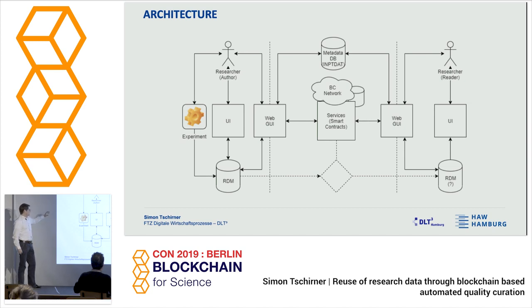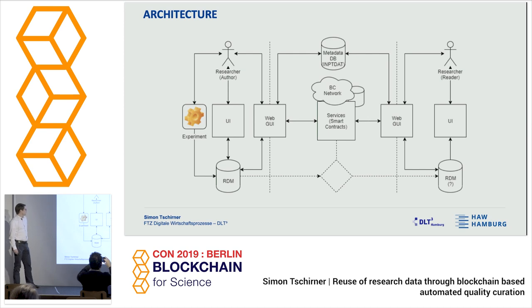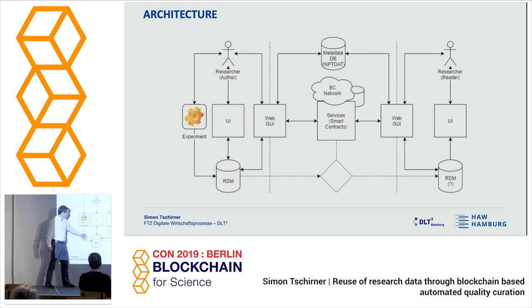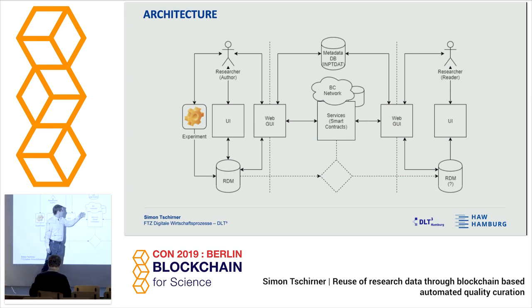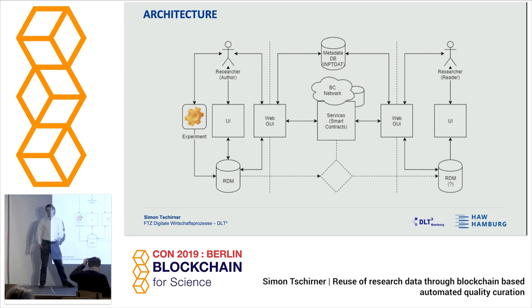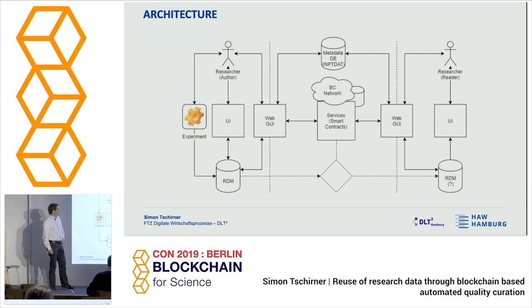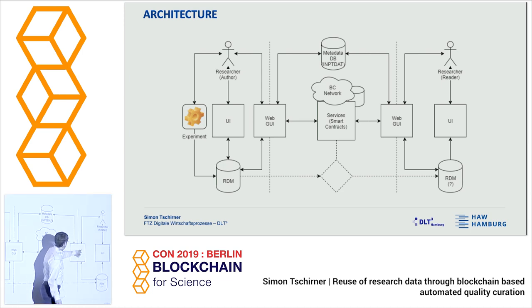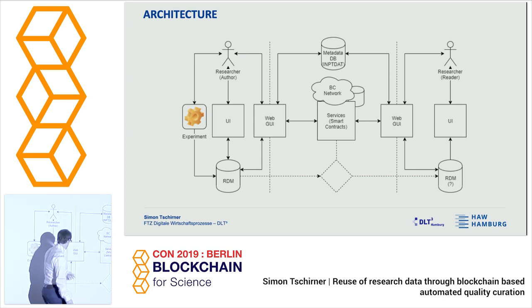This is the architecture we came up with. It has three parts: the researcher as author, the researcher as reader, and the database-blockchain part in the middle. It starts with the researcher doing experiments — data is transferred to the research database locally. The researcher can then use a web UI to access services from our blockchain solution, to first certify the research data. We write the important metadata and the hash to the blockchain, while other metadata is published in a conventional database for search. Other researchers can then search via the web interface, and when they find something interesting, they can ask for access.